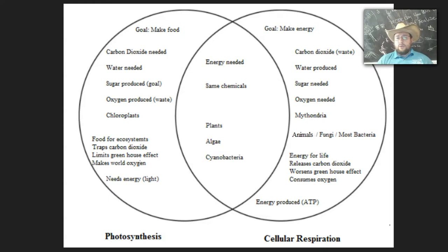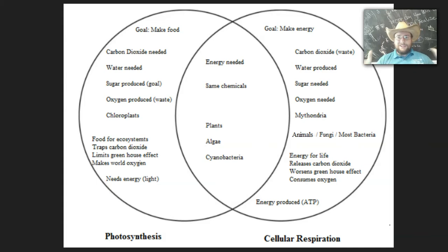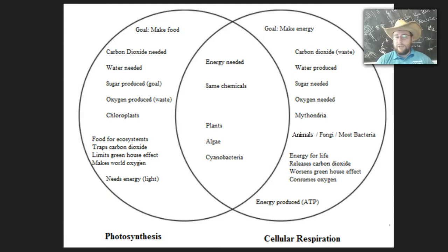Now, cellular respiration releases that carbon dioxide back into the atmosphere by breaking down the sugar. Do note that plants that died a long time ago and became oil are now currently releasing carbon dioxide as they're being burned by humans. And so that's where the extra carbon dioxide recently being added to the atmosphere is all coming from — really from plants that trapped it a long time ago.